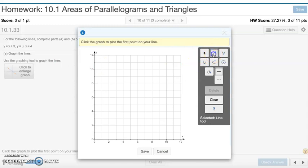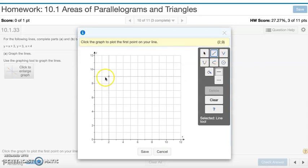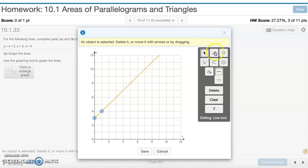The first line has a y-intercept of 3 and a slope of 1, so go up 1 over 1. Now the other lines, one's horizontal, the other's vertical.